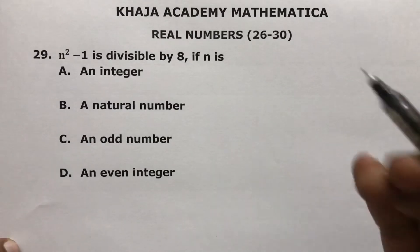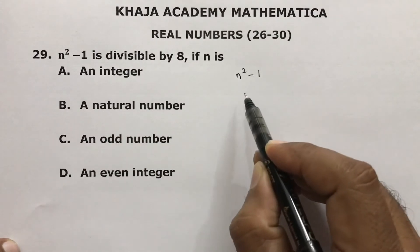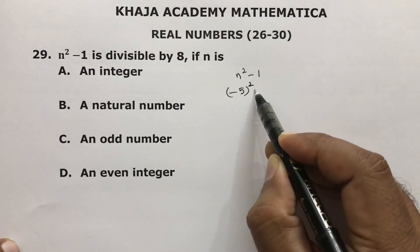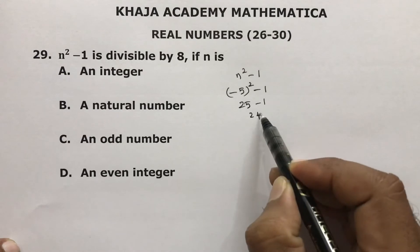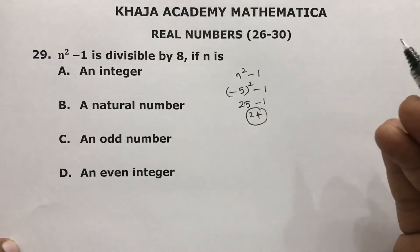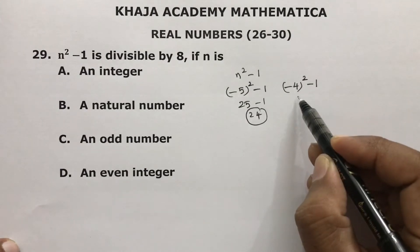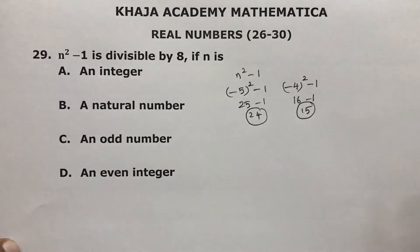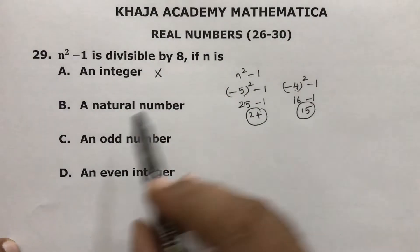n squared minus 1 is divisible by 8 if n is what type of number? If we take integers, take some negative values: minus 5 whole square minus 1 gives 24, and taking minus 4 gives 16 minus 1 which is 15, which is not divisible by 8. So integer is not the correct option. For natural numbers, 2 squared minus 1 is 3, which is not divisible by 8, so natural number is also not possible.